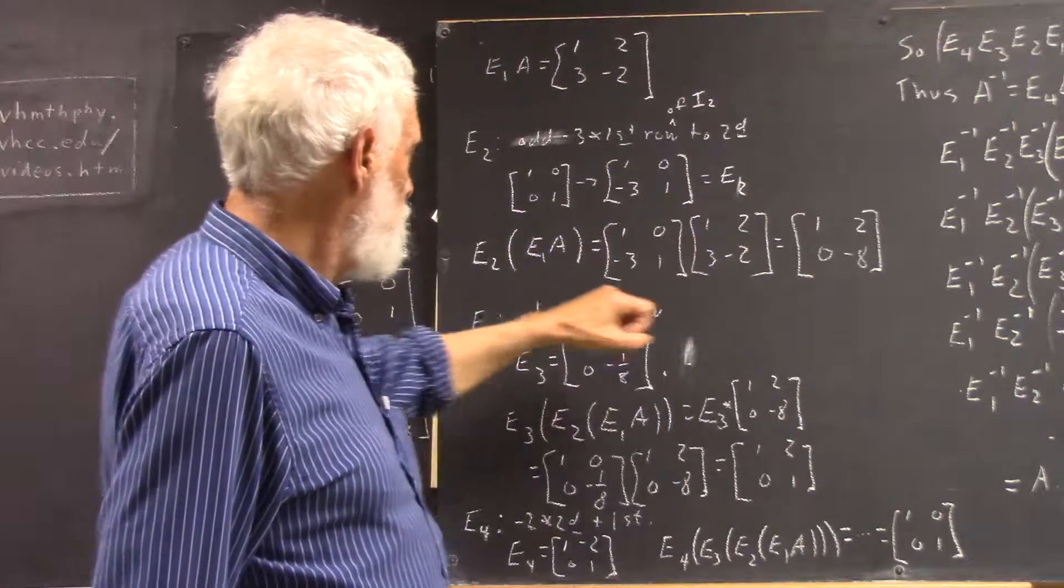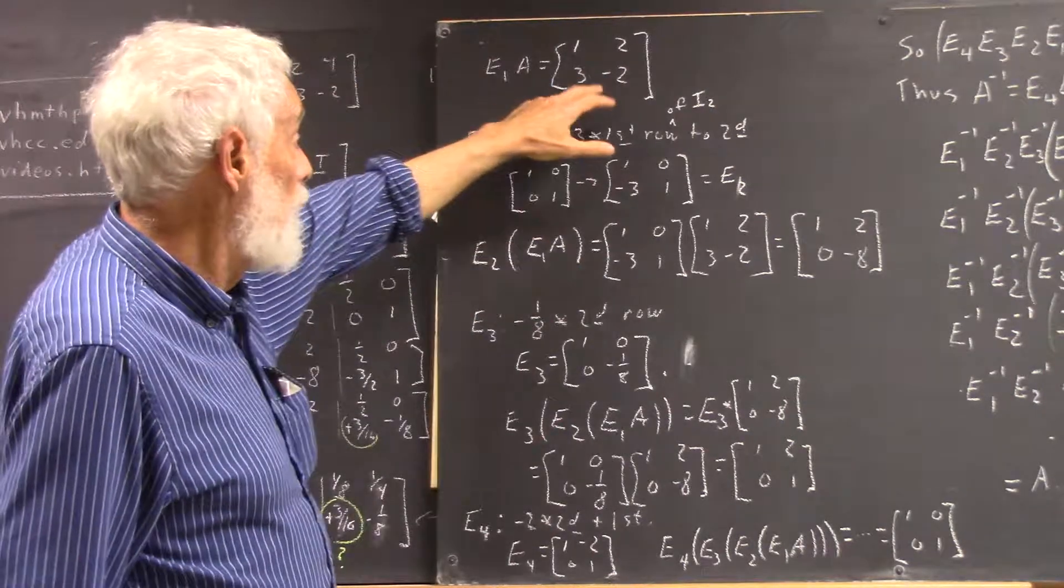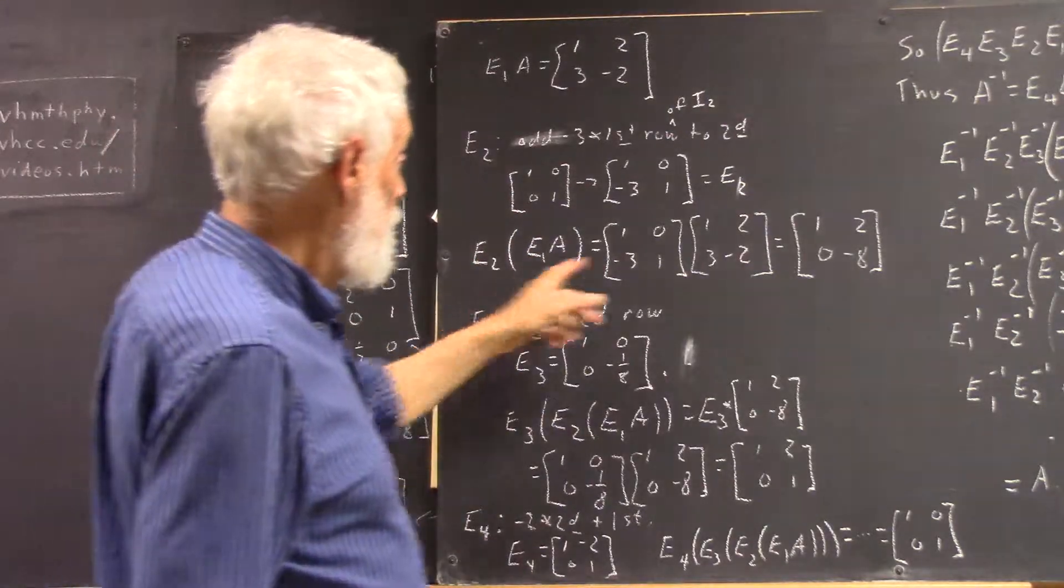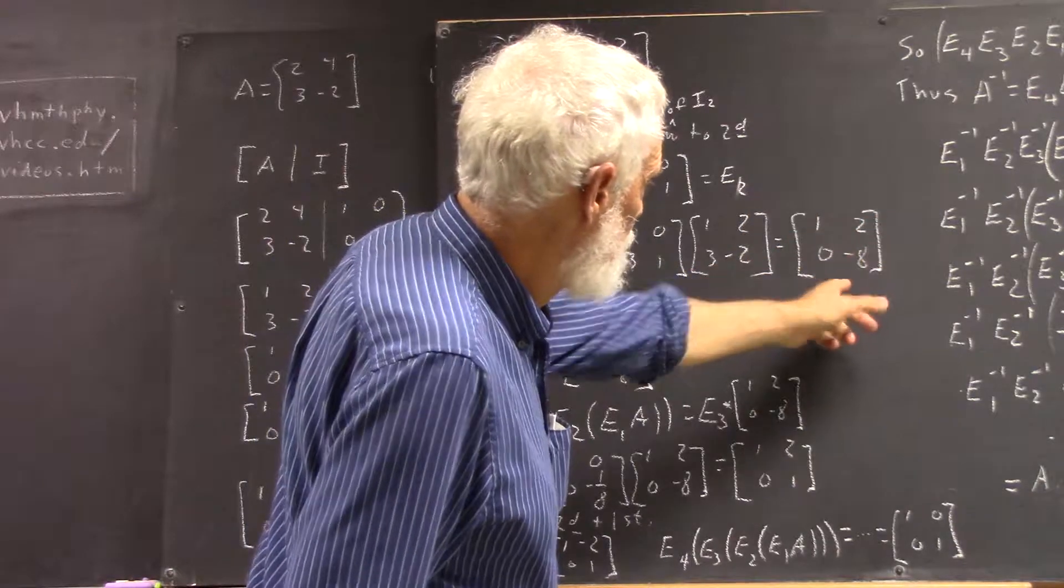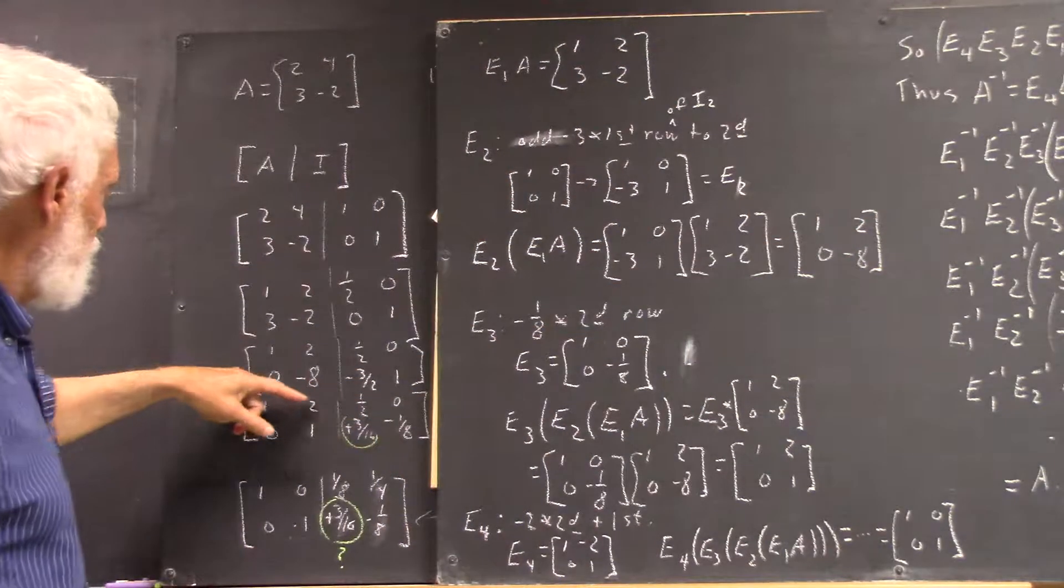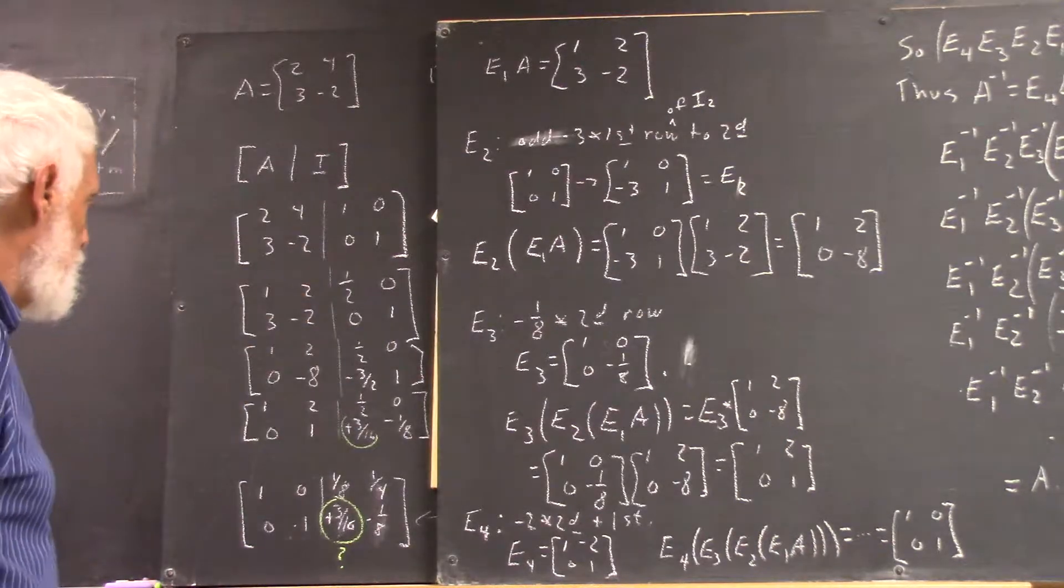We multiply our E2 matrix by the matrix that we got here. Our E1A matrix turns out. Well, our E1A matrix is this. Our E2 matrix is this. And you can verify this product. And we see that this matrix agrees with the matrix we have here to the left of the vertical line.